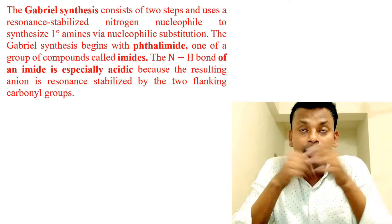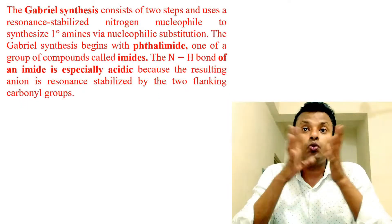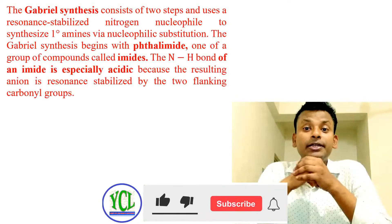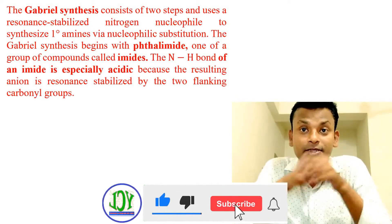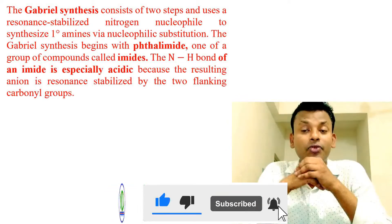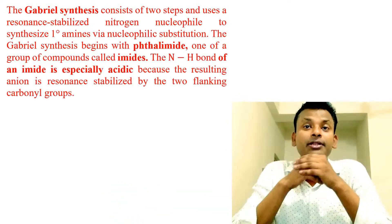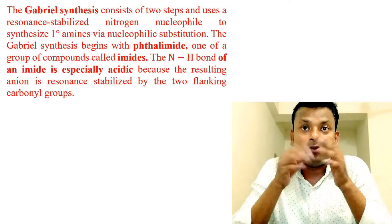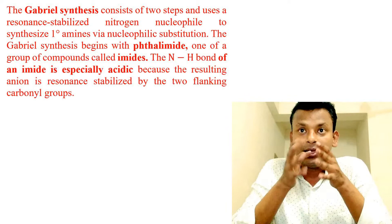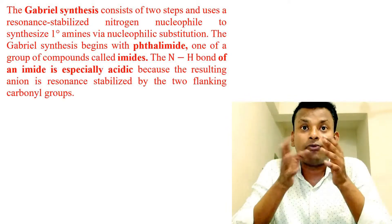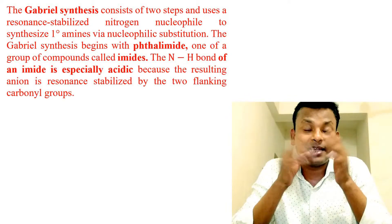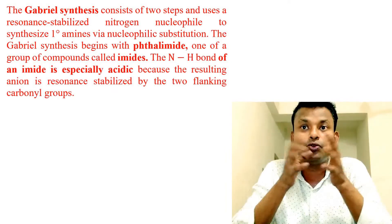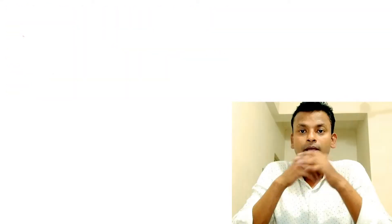The Gabriel synthesis consists of two steps and uses a resonance-stabilized nitrogen nucleophile to synthesize one-degree amines via nucleophilic substitution. The Gabriel synthesis begins with phthalimide, one of a group of compounds called imides. The N–H bond of an imide is specially acidic because the resulting anion is resonance-stabilized by two flanking carbonyl groups.